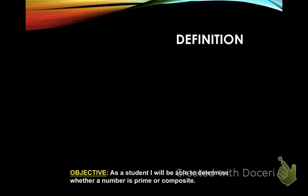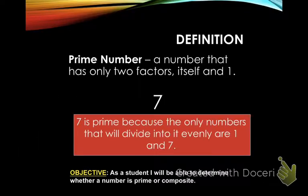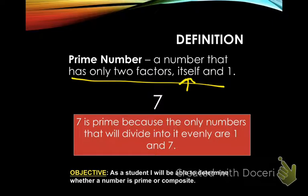Now, why is that important? We're going to start talking about prime numbers. Factors are two numbers that you multiply together to get a bigger number. A prime number is a number that has only two factors — itself and one. For example, seven is a prime number because the only numbers that divide into it evenly are one and seven. Two, three, four, and five don't work. So one and seven are the only two factors, and that makes it prime.